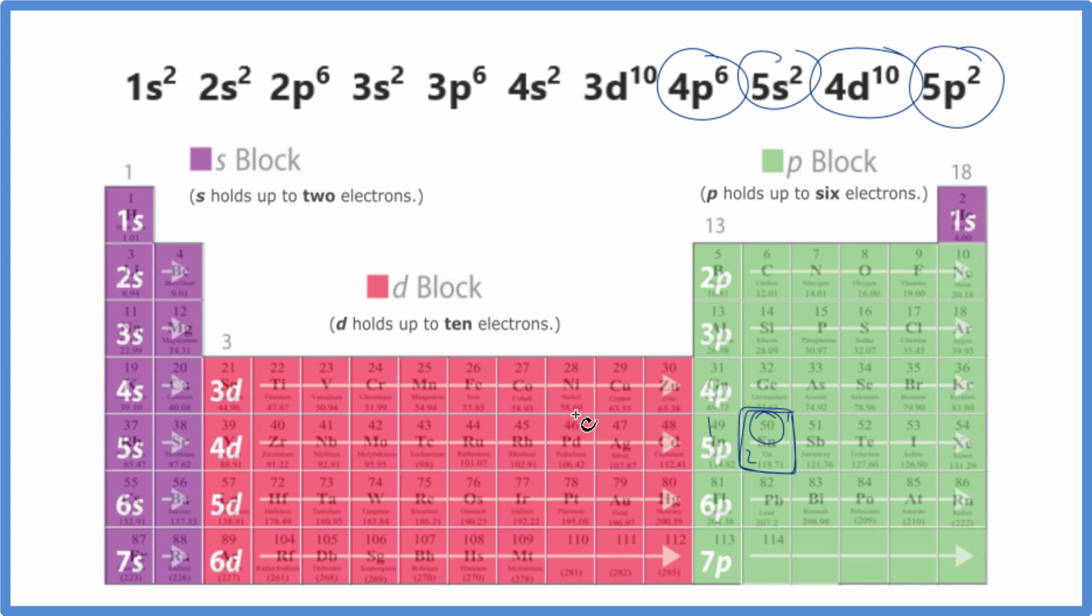This is another way you can find the electron configuration for Tin. Let's write this in condensed notation, and then we'll go back to work on the ions. To write in condensed notation, we're going to find the noble gas that's before Tin. If we go this way, here's Kr, Krypton. So we write Kr and put brackets around it. Krypton has 36 electrons.